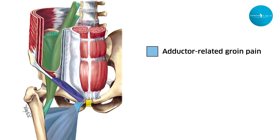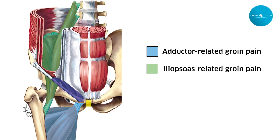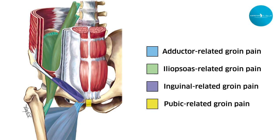The treatment of groin injury depends on what kind of injury you have. For athletes there are four main locations: adductor-related groin pain, iliopsoas-related groin pain, inguinal-related groin pain, or pubic-related groin pain. If you look at the picture, you can see these four main injury locations, and the treatment will vary depending on which one you have.